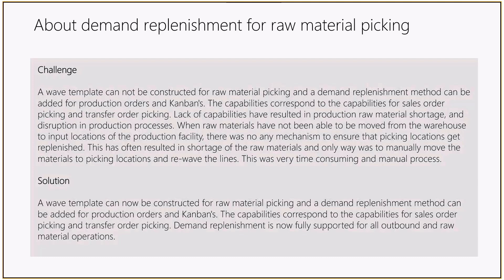We have two main types of replenishment in the system: min and max replenishment, and demand replenishment. Minimum and maximum replenishment is a batch-based process, usually run once a day, which assesses location levels across the warehouse and determines what needs to be replenished. It works for fixed locations, variant locations, items, and empty locations. Think of it like a supermarket replenishing shelves before opening — each item is replenished to a certain quantity level.